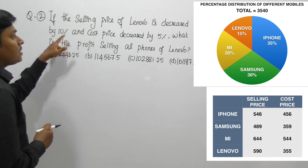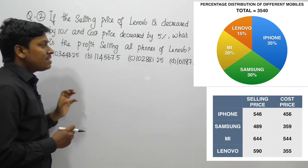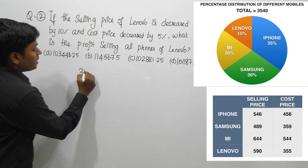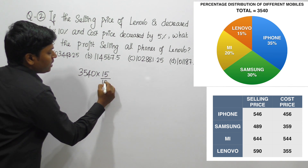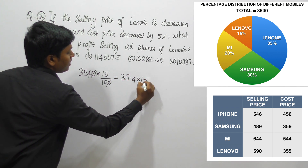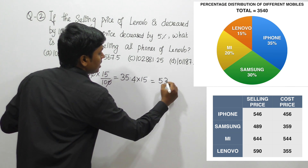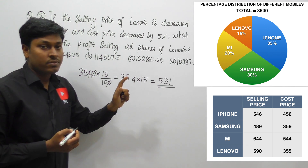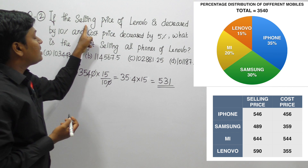Question number two: if the selling price of Lenovo is decreased by 10% and the cost price is decreased by 5%, what is the profit earned from selling all Lenovo phones? First, out of 3540 total mobiles, Lenovo is 15%. So 15/100 × 3540 = 35.4 × 15 = 531. Therefore, total Lenovo mobiles are 531.